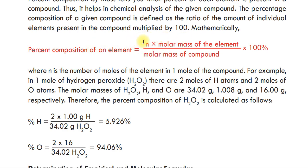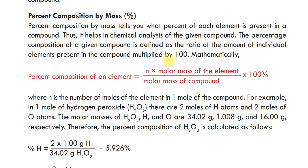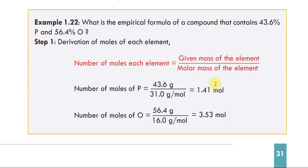The number of moles of an element N is equal to the given mass of the element divided by the molar mass of the element. So the number of moles of phosphorus equals 4.70 g divided by the molar mass of phosphorus.